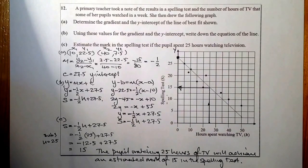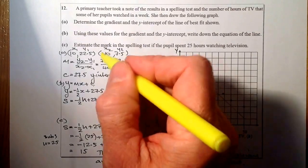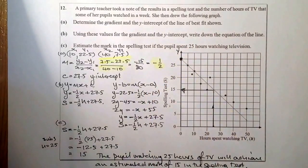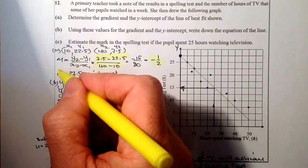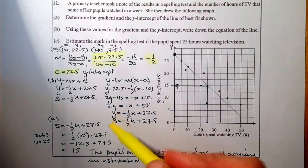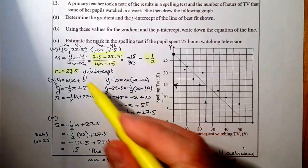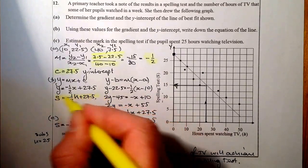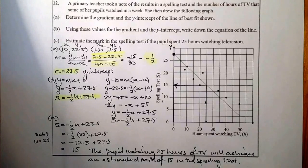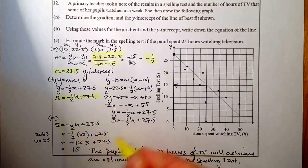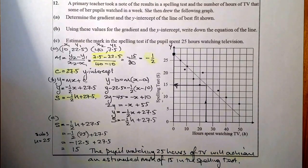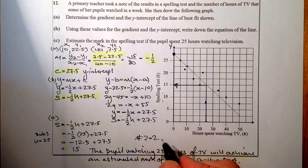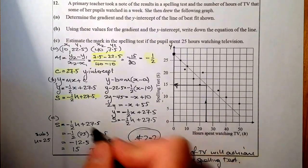For marking Question 12: one mark for substituting two points into the gradient equation, one mark for getting the gradient of −½, one mark for finding the c value (y-intercept of 27.5), and one mark for getting the formula in s and h form — four marks total. The final mark for Part C and communication is an outcome 2.2 mark for explaining or relating the solution to context.